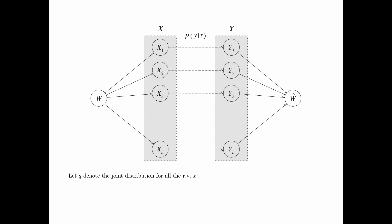Let q denote the joint distribution for all the random variables. For such a general distribution q, it can be factorized as q(W) · q(X1|W) · q(Y1|W,X1) · q(X2|W,X1,Y1) · q(Y2|W,X1,...) and so on and so forth. Such a factorization is valid as long as the conditional events all have non-zero probabilities; otherwise the joint probability is equal to zero.